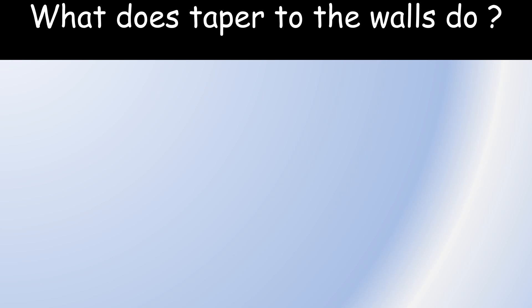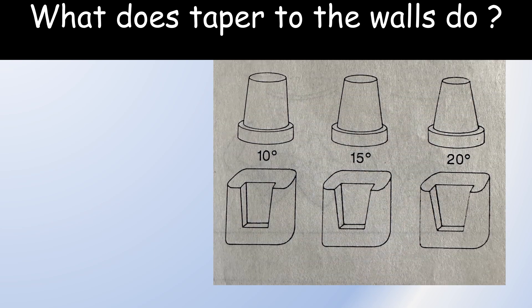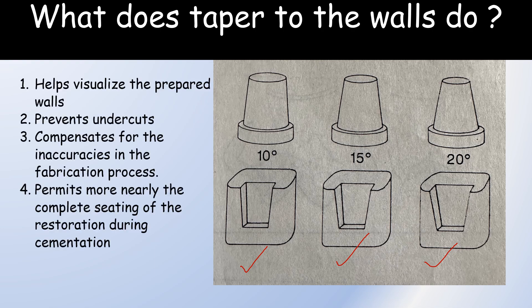Now what does taper do to the walls? There are three situations described here: walls with 10 degrees taper, 15 degrees, and 20 degrees — an arbitrary situation to explain taper. Taper helps to visualize the prepared walls, because of the taper we are able to see the prepared walls better. It also prevents undercuts, allowing the restoration to move in and out of the tooth very easily without any hindrance. It compensates for inaccuracies in the fabrication process, and taper permits more nearly complete seating of the restoration during cementation.